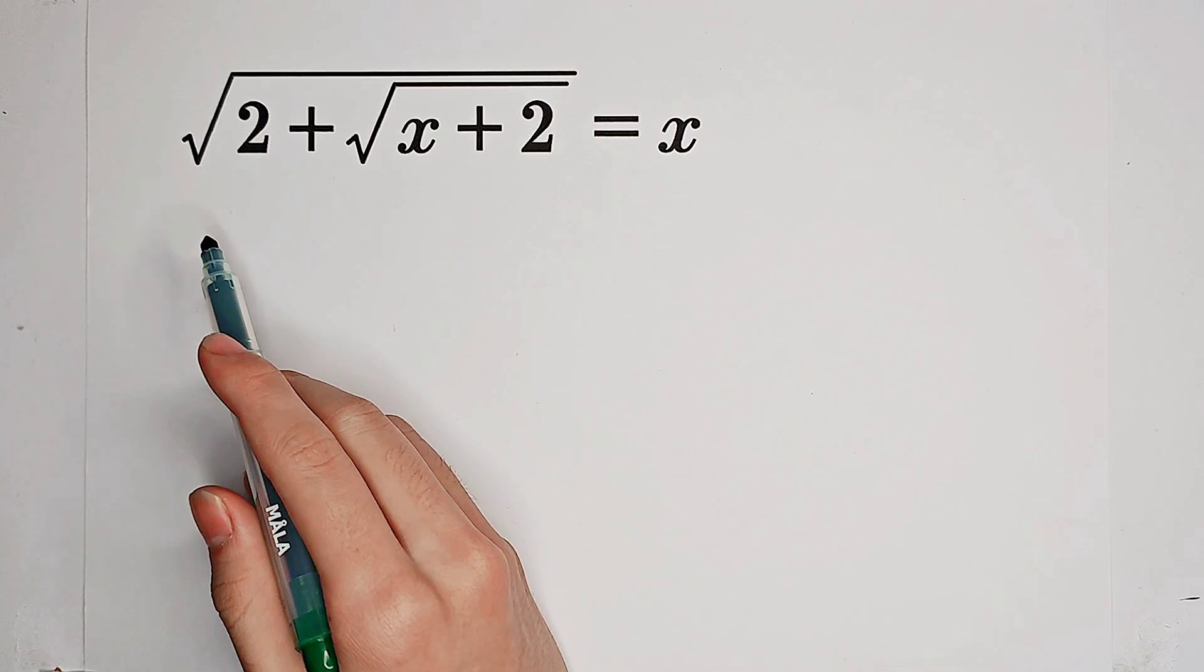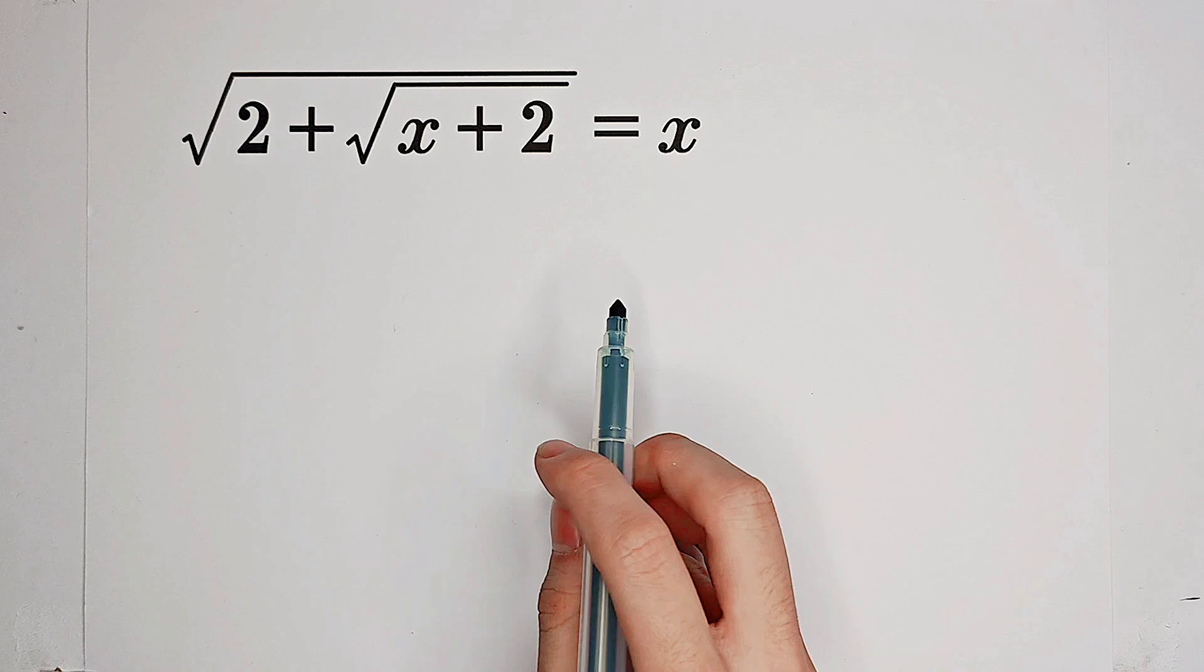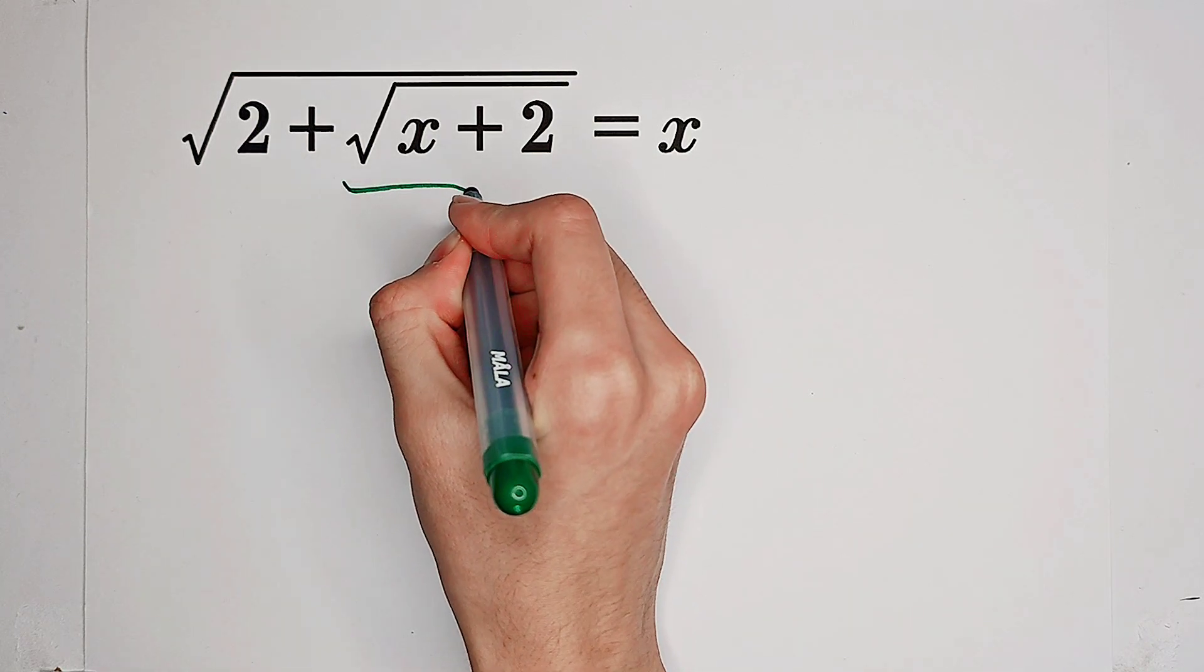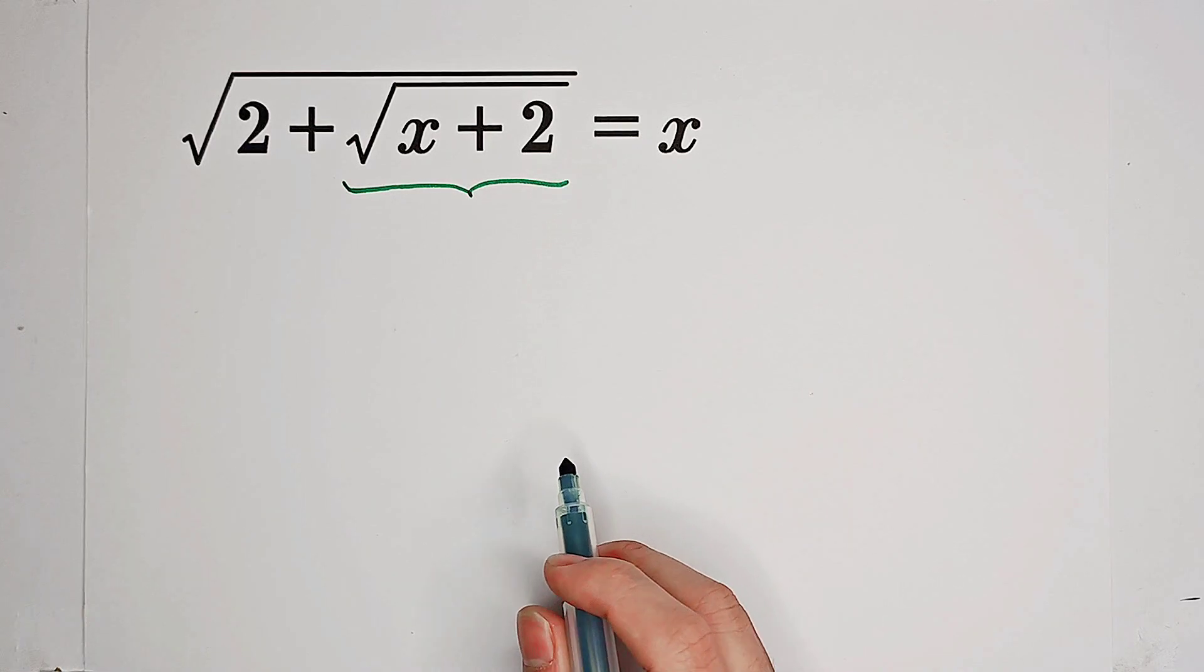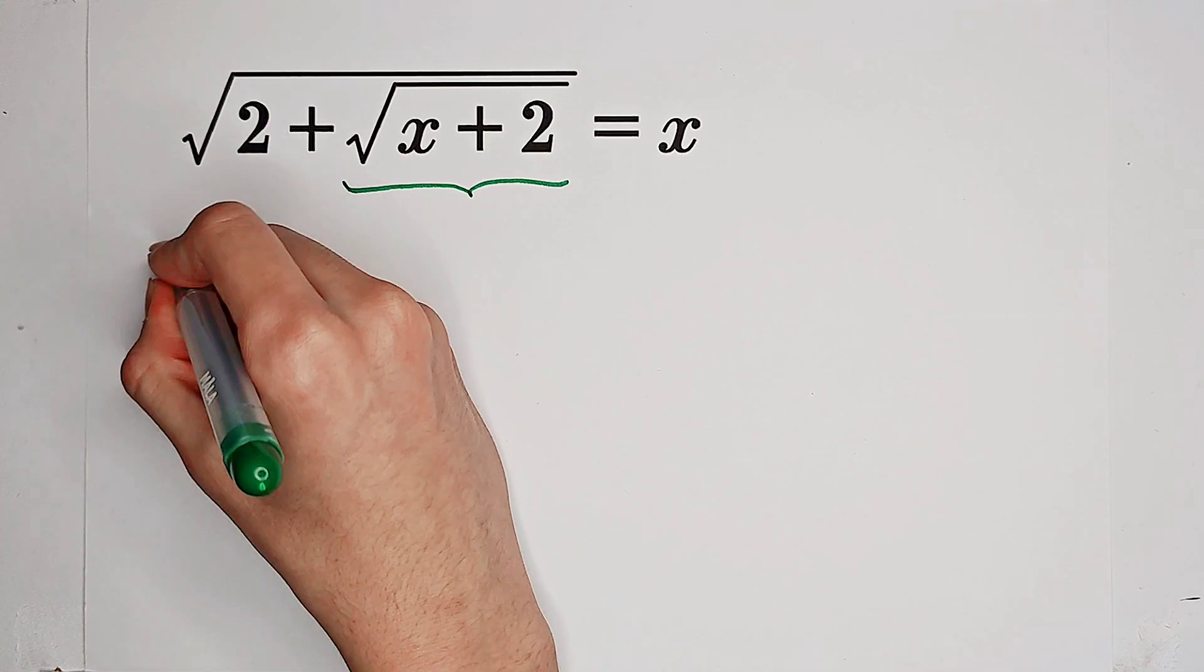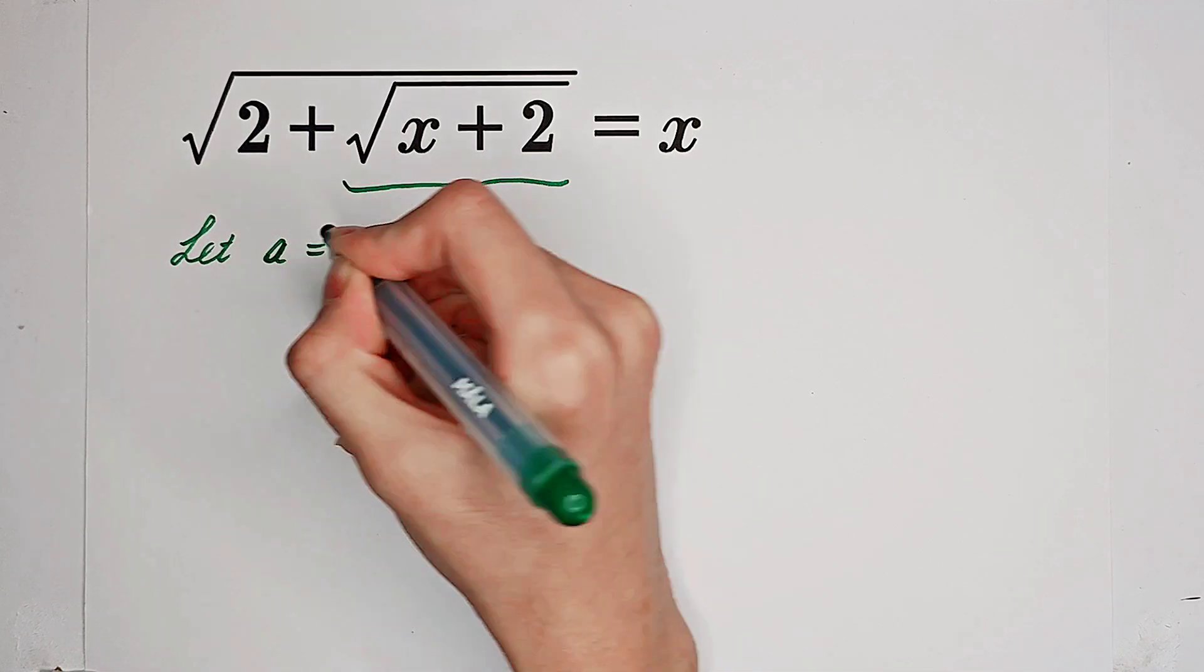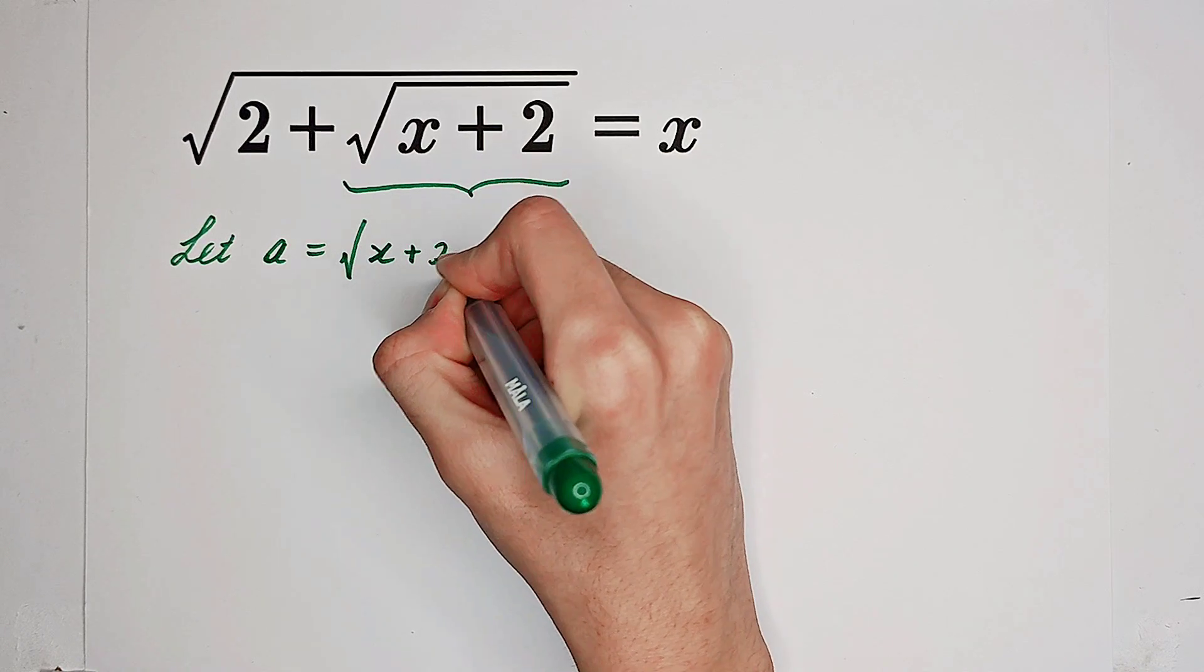Solve the equation: square root of 2 plus square root of x plus 2 equals x. What shall we do? Of course, substitution, because this square root inside the big square root does really bother us. So we can just let a be equal to this annoying square root of x plus 2.